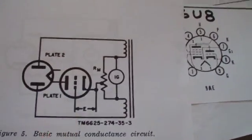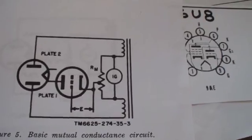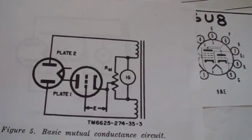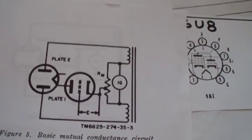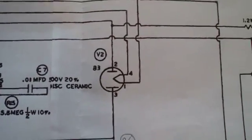Well, that is essentially the mutual conductance. In other words, it's the variation of plate current to grid voltage. And that's how they do it in the Hickok circuit. The B and K circuit is pretty much the same way, using an 83 tube.